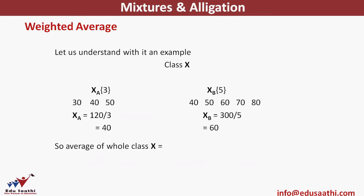Let's take an example. There is a class with two sections. In the first section there are three students with marks 30, 40, and 50 — giving an average of 40. In the second section there are five students with marks 40, 50, 60, 70, and 80 — giving an average of 60. Now if I have to find the average of the whole class, I cannot simply take the average of 40 and 60 — that would be wrong. Because the number of students in both sections are not the same, their contributions are different, so simple average will not work — I must use weighted average.